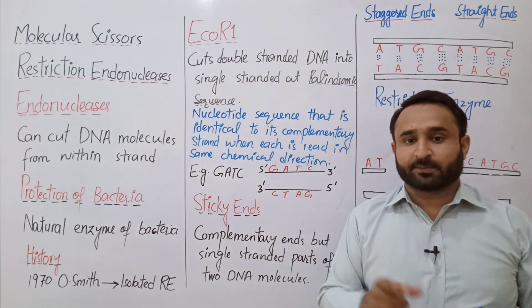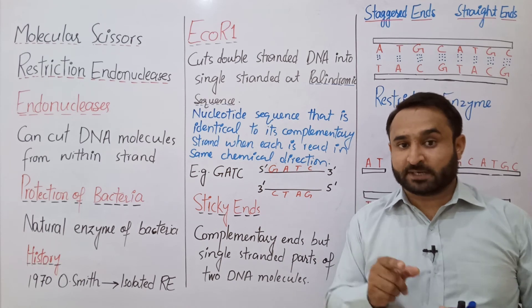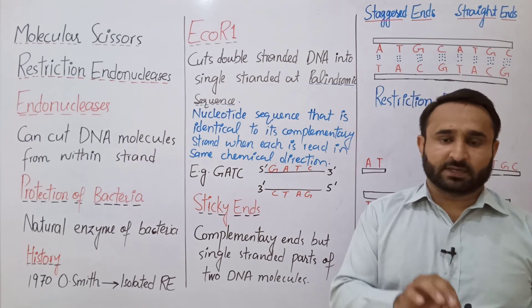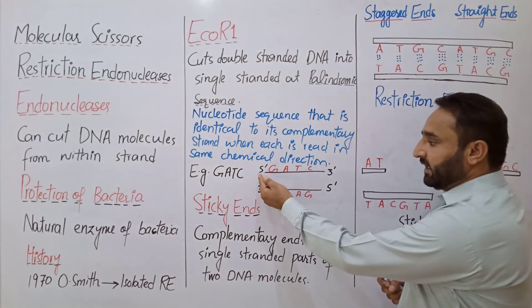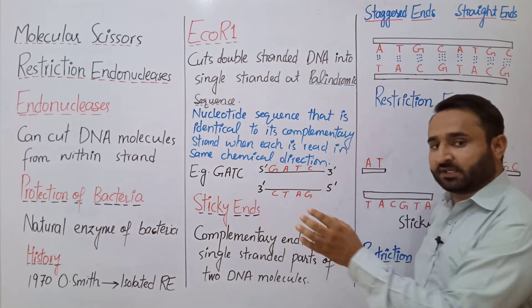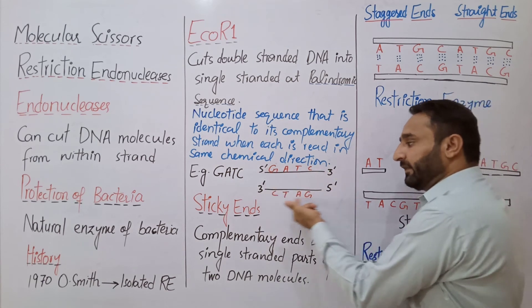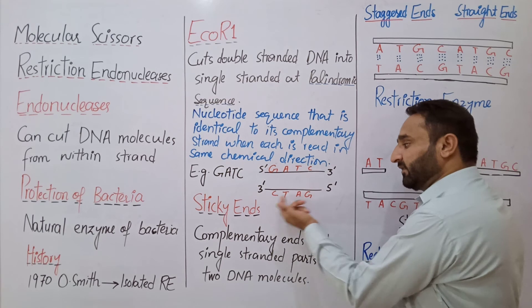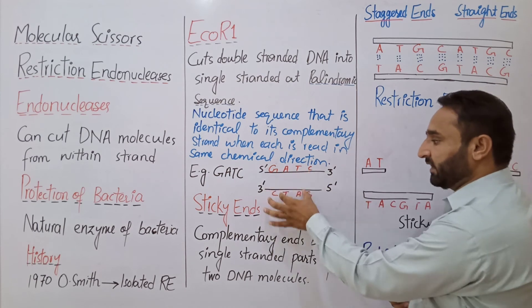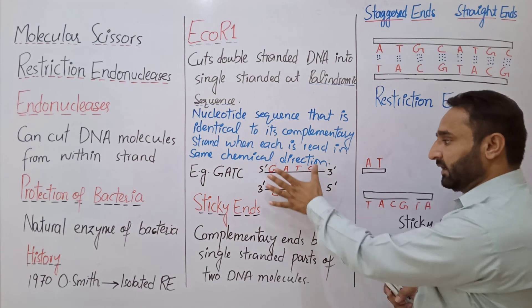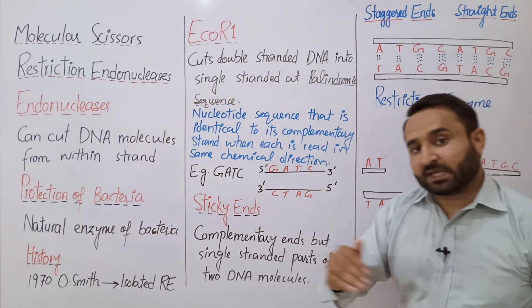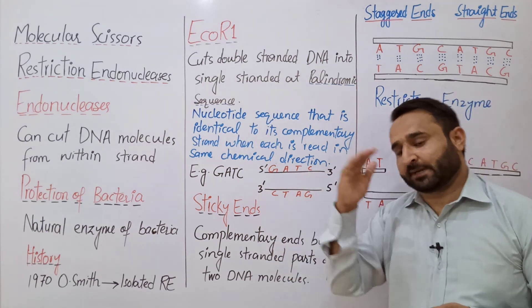When we talk about pentose sugar carbons, we use the prime notation. 3' means carbon number 3 of pentose sugar; 5' means carbon number 5 of pentose sugar. If I read this sequence G-A-T-C from 5' to 3', and I read the complementary strand also from 5' to 3' — the same chemical direction — I get G-A-T-C again. This is the palindromic sequence: a nucleotide sequence identical to its complementary strand when each is read in the same chemical direction, from 5' to 3'.